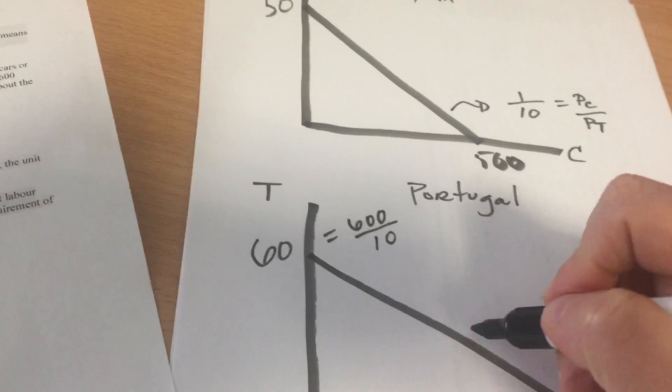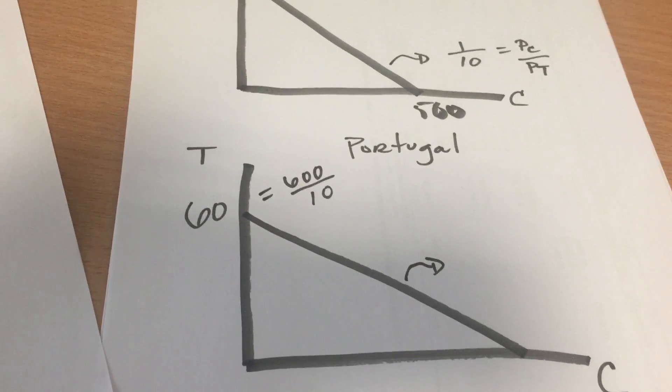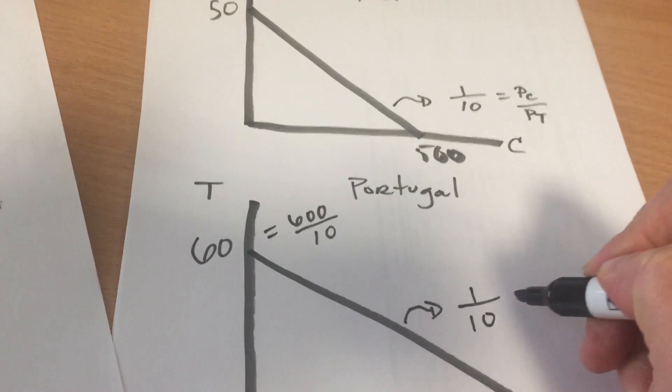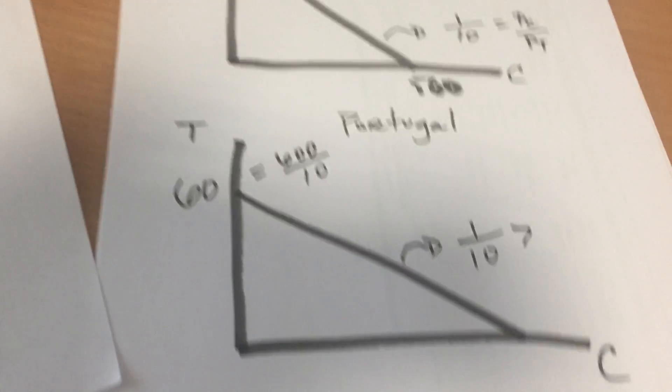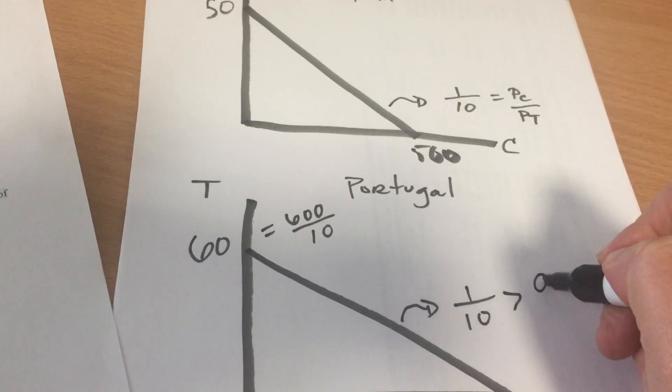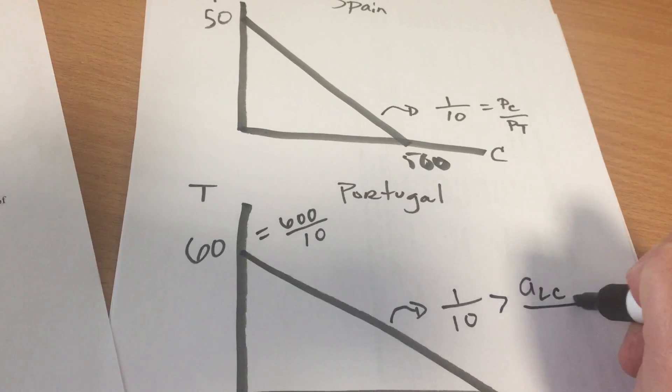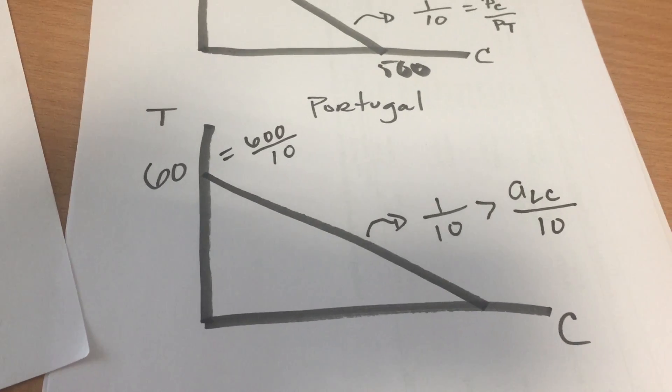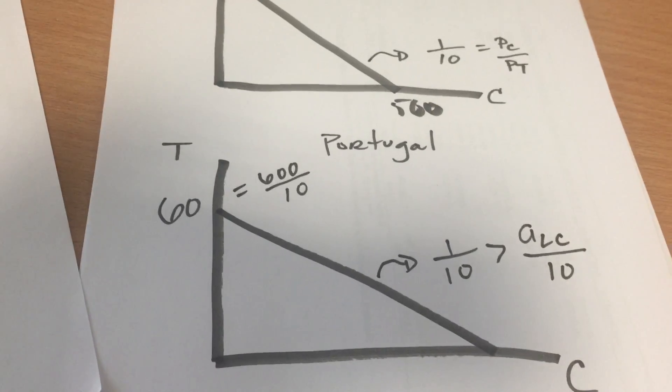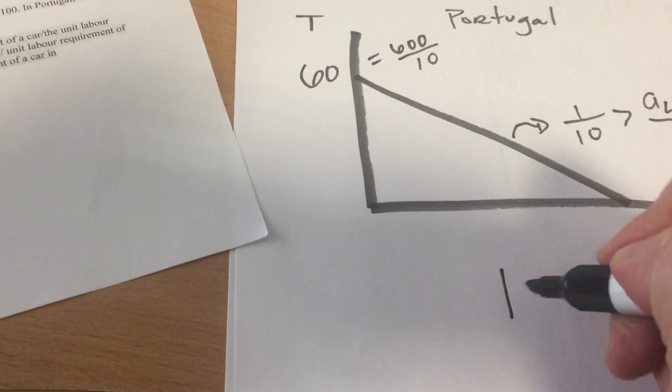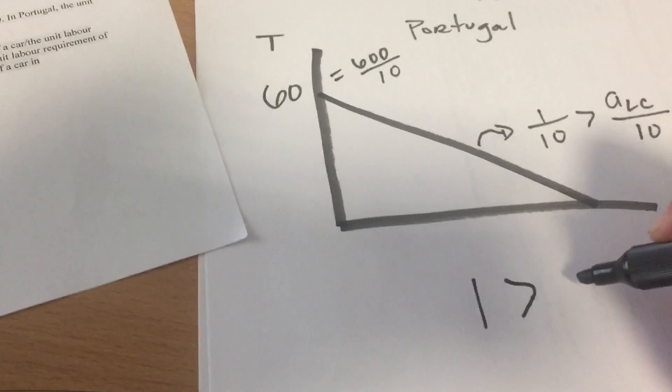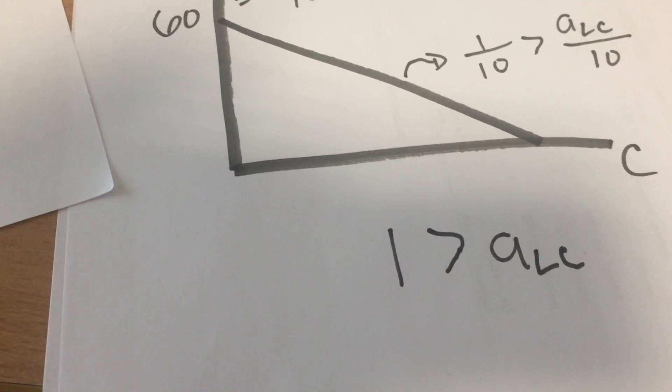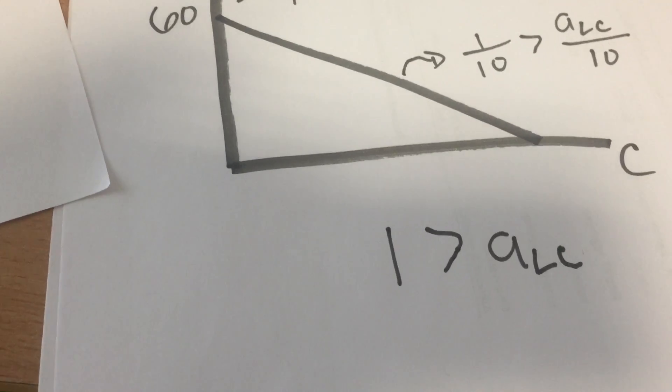Now, what do we need? We need the price here to be less than one-tenth. So one-tenth has got to be greater than the autarky price of a car. Well, we don't know what the unit labor requirement for a car is, but we know that the unit labor requirement is 10. And so multiply each side by 10, what does that tell us? One is greater than the unit labor requirement for a car in Portugal. And that's the most we can really say.